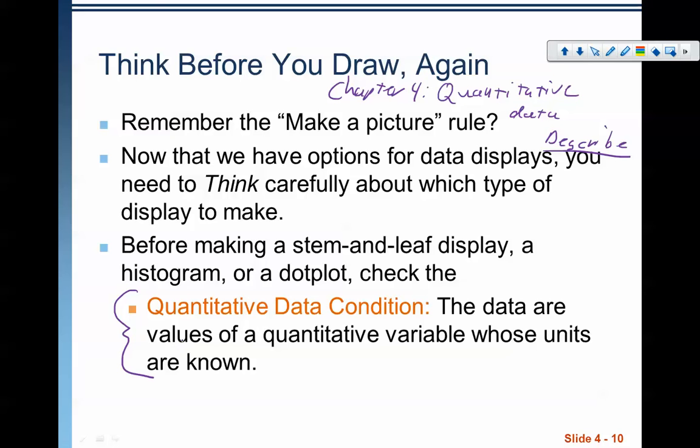Basically, you're making a quick check right in the beginning to make sure that what we're talking about is a quantitative variable. This is called the quantitative data condition because none of the things that we're about to do in the next two videos make sense if we're talking about categorical variables.